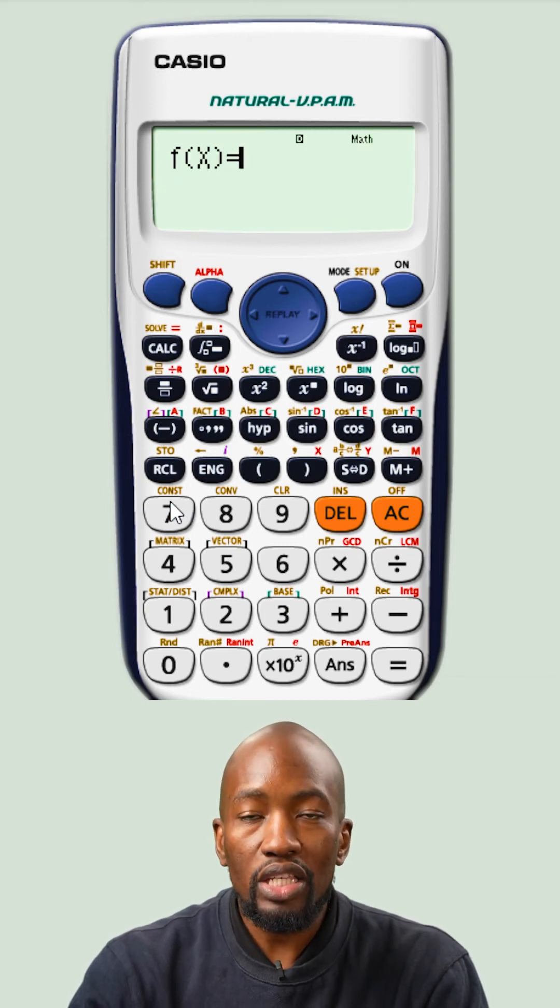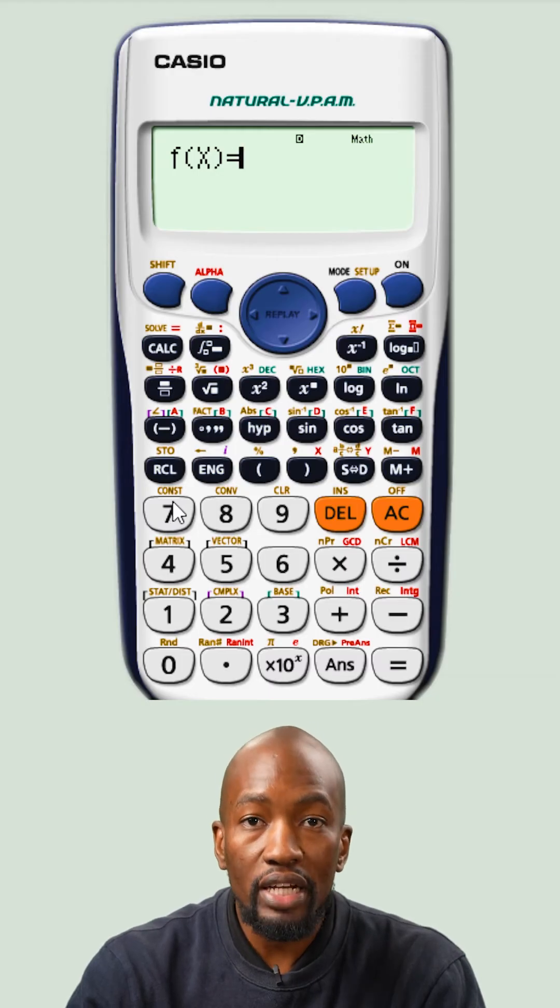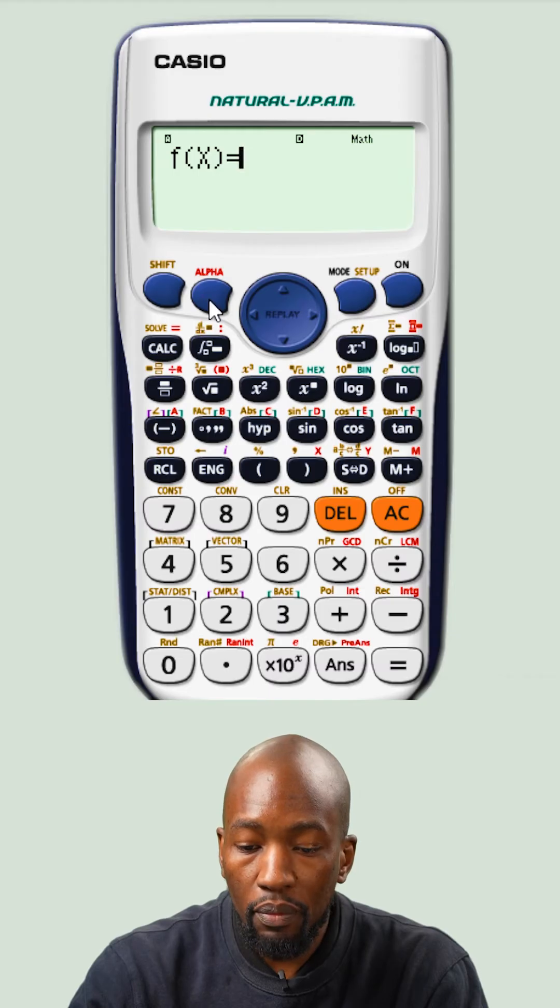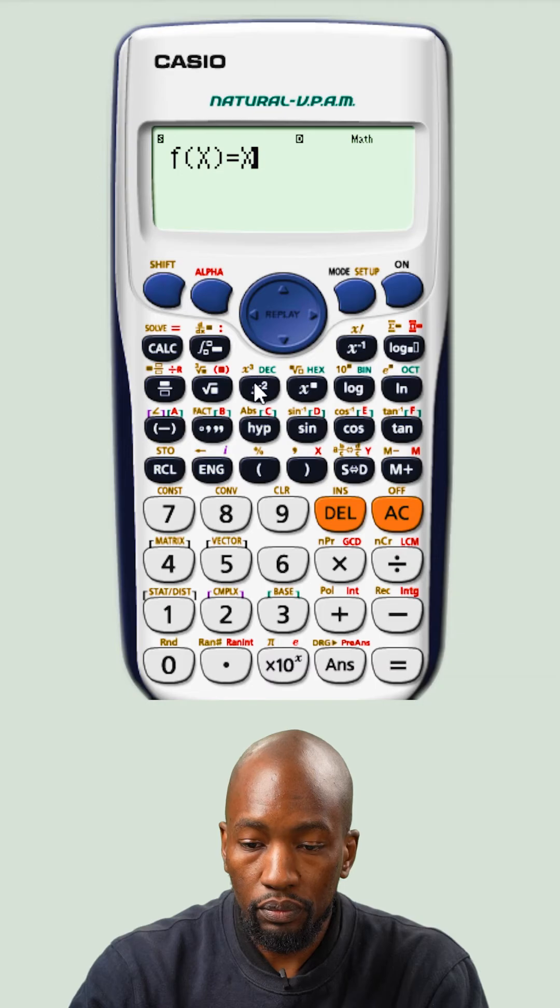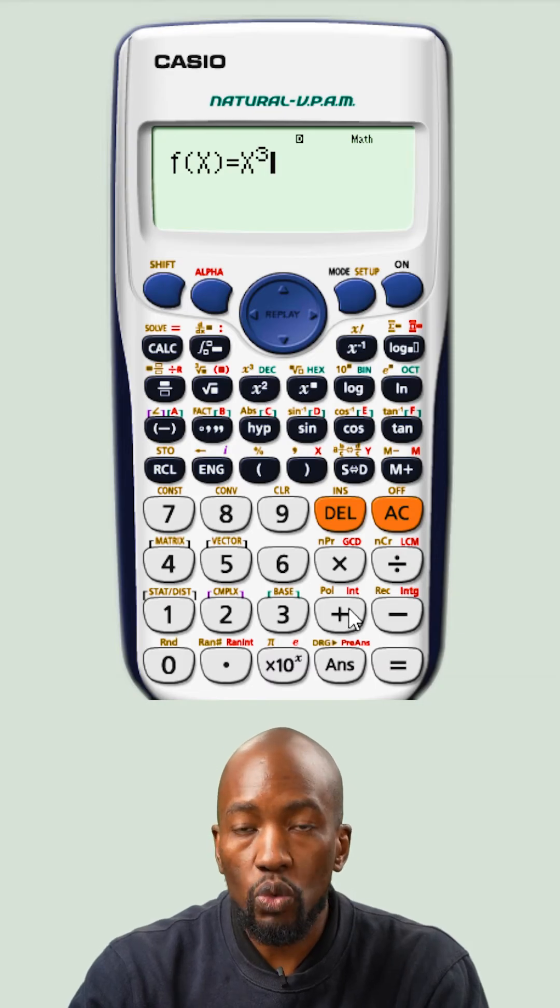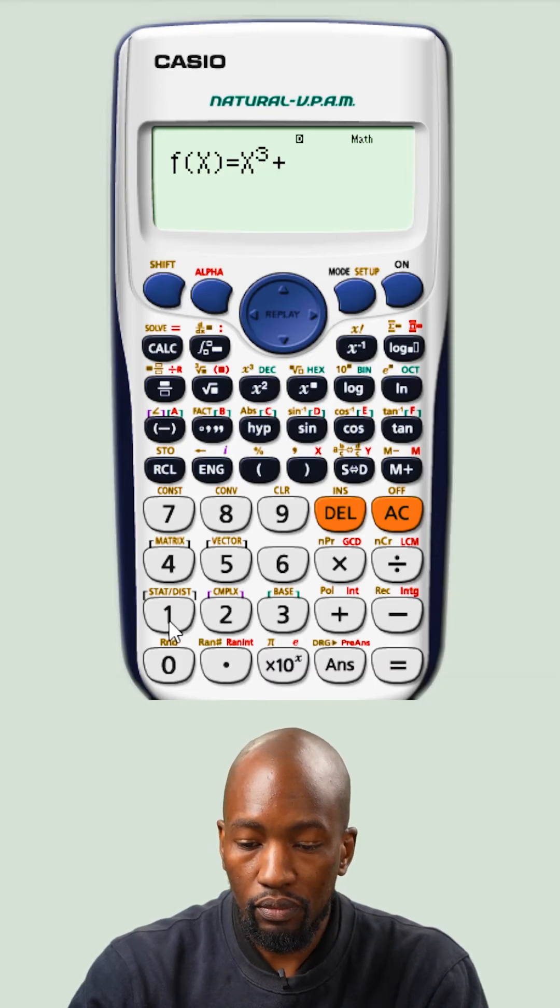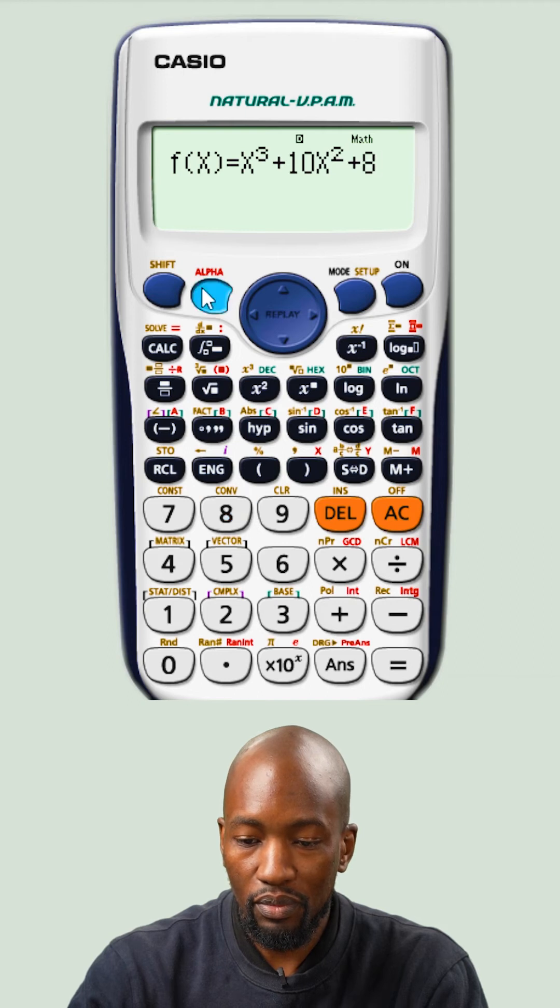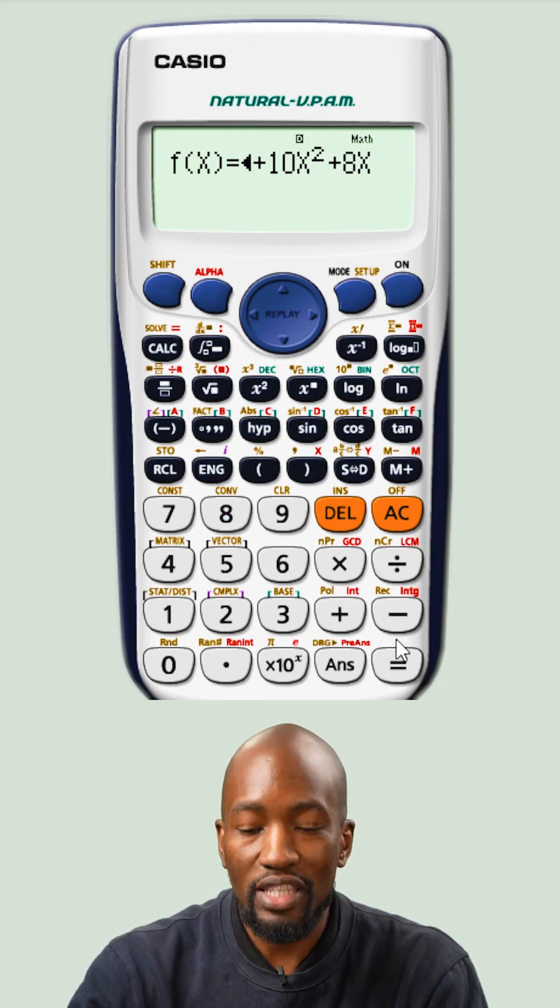Now it will ask you for f(x). What is f(x)? f(x) is the function that they gave you, that cubic polynomial. So let's insert that. Our function is x to the power of 3, so we're going to go alpha x to the power of 3, plus 10x squared, plus 8x, minus 64.